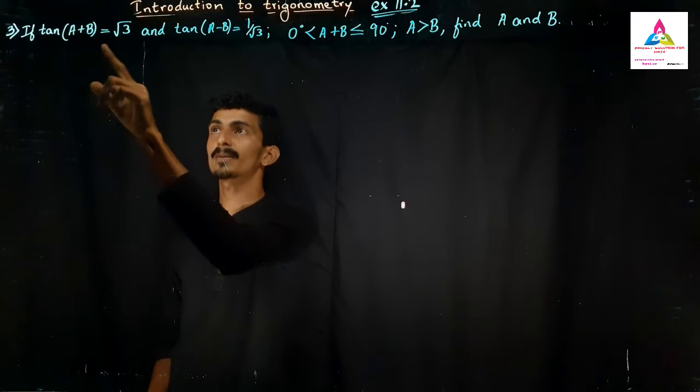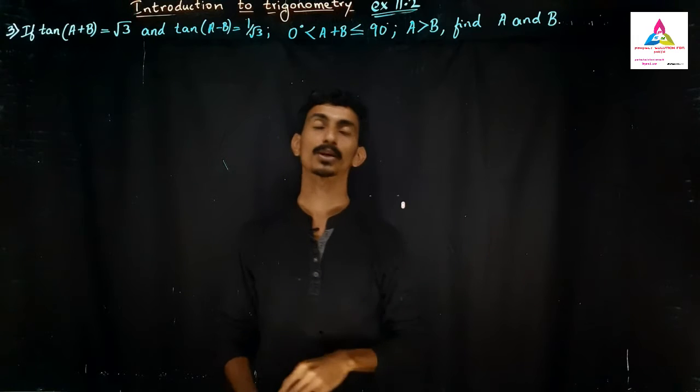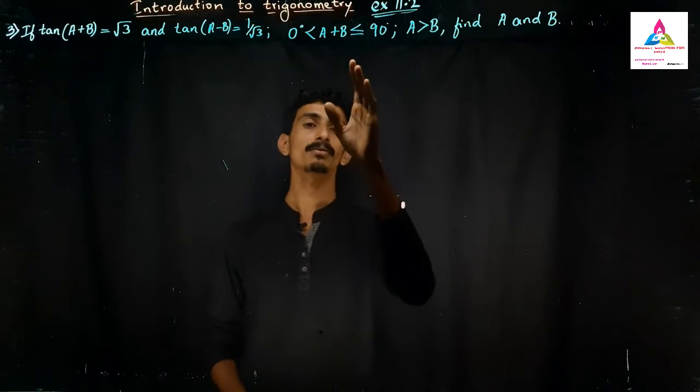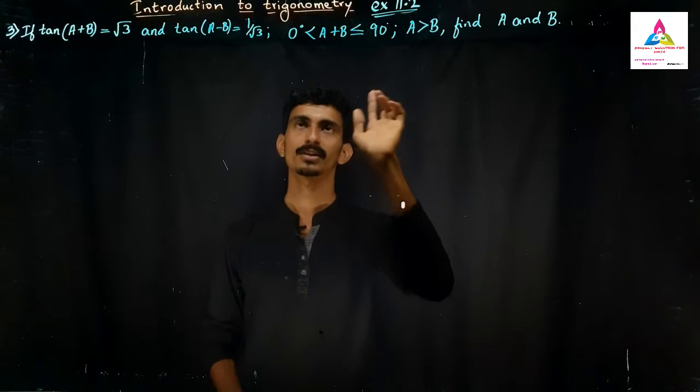If tan(A+B) is equal to root 3 and tan(A-B) is equal to 1 by root 3, and this A+B value is greater than 0 and less than or equal to 90 degrees.